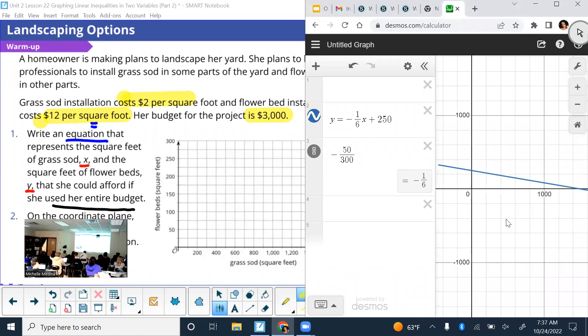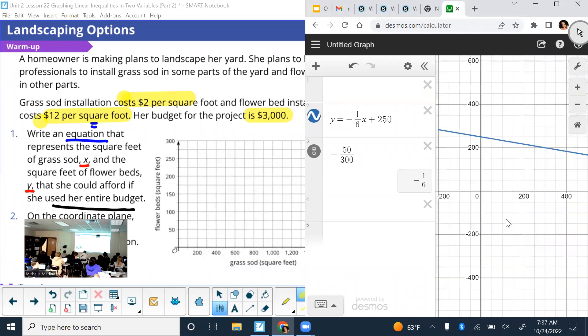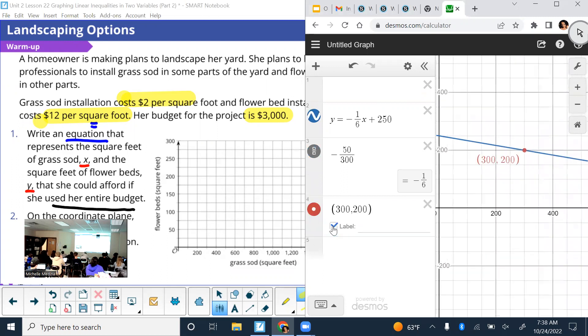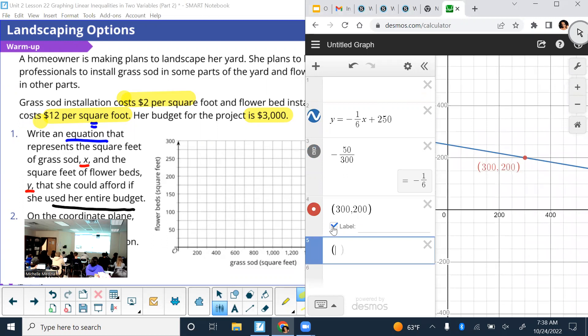All right, would it be possible to have negative answers? No, so don't pick those. The ones that I found were 300 comma 200 on the line, and I think that's on your paper too, correct? Yep. 600 comma 150.